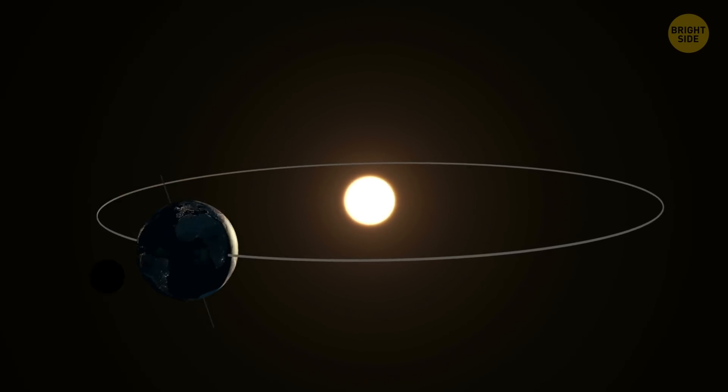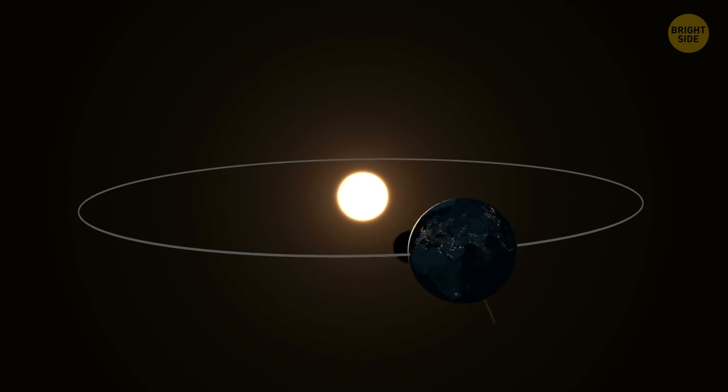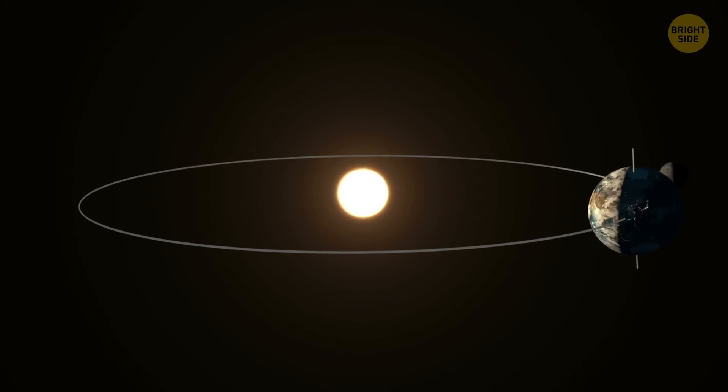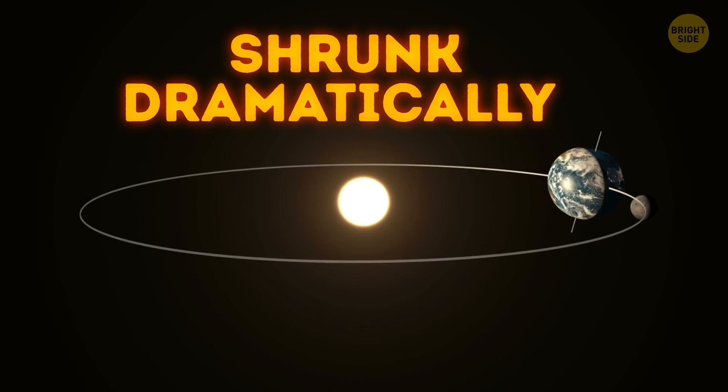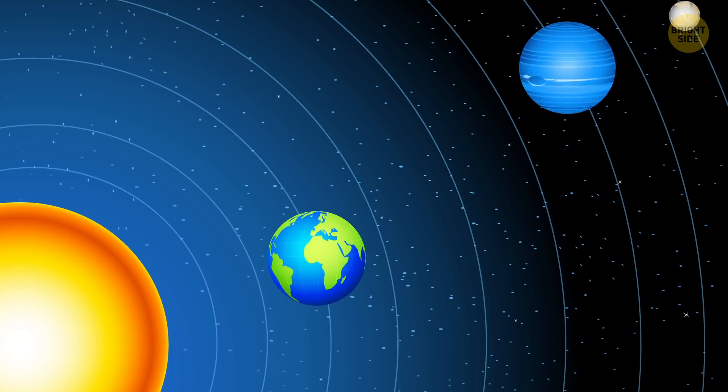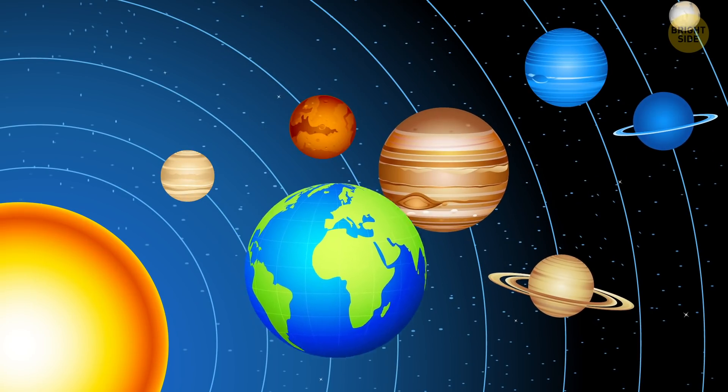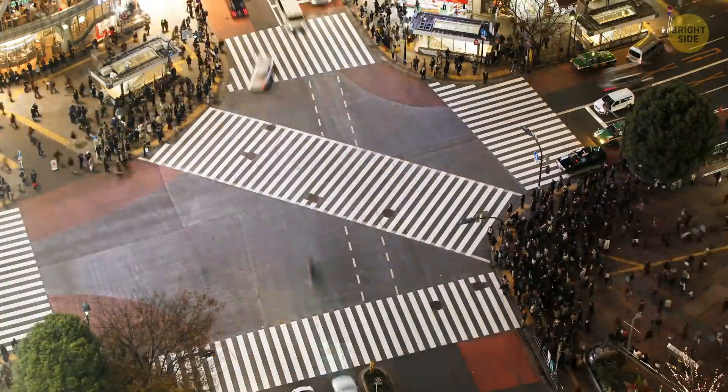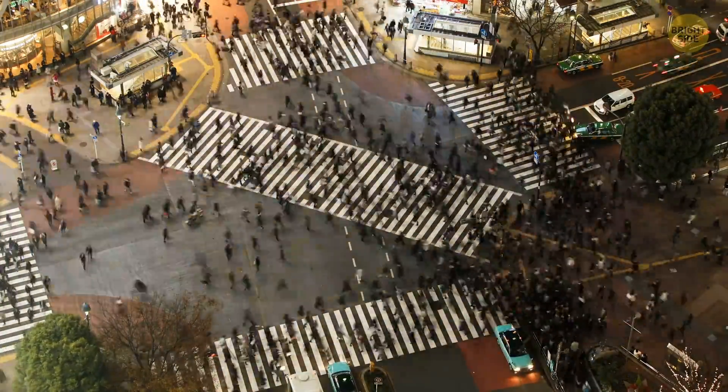That's why the habitable zone around our sun, meaning the region where liquid water could remain on the surface of a planet, shrunk dramatically. Sadly, Earth turned out to be out of the sun's habitable zone. Of course, people didn't feel the changes immediately. The climate all over the planet was getting colder and colder, and astronomers' forecasts were getting grimmer.